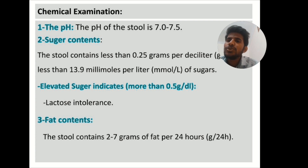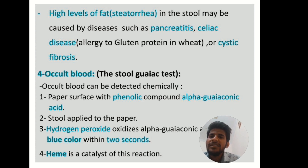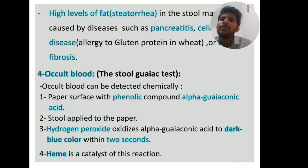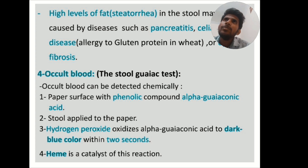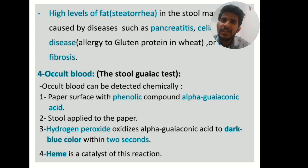For fat contents, the stool contains 2 to 7 grams of fat per 24 hours. High levels of fat — that is steatorrhea — in the stool may be caused by pancreatitis, celiac disease, and cystic fibrosis. Next comes occult blood. There is an upcoming video on the occult stool blood test for diagnosis of blood in the feces.